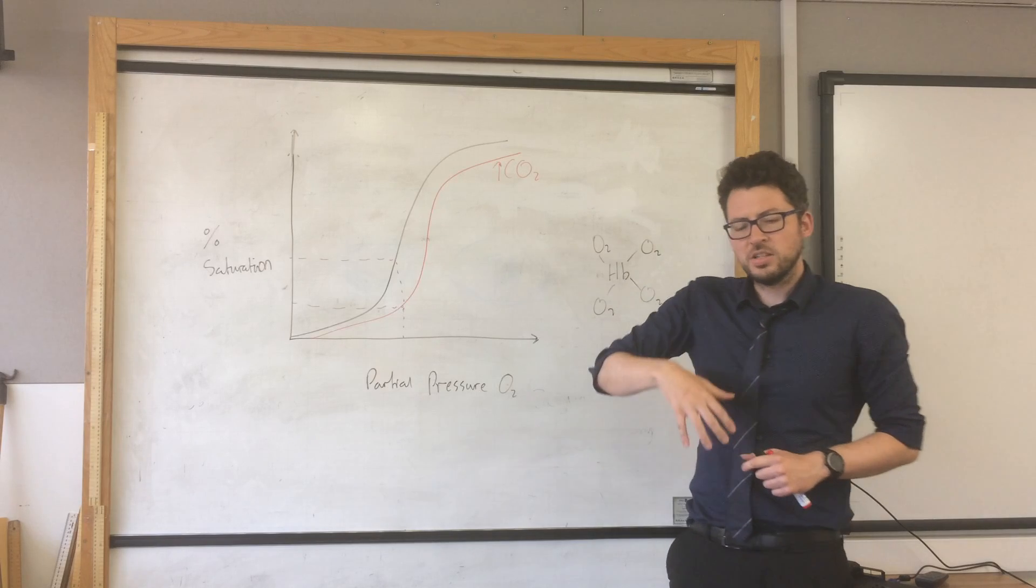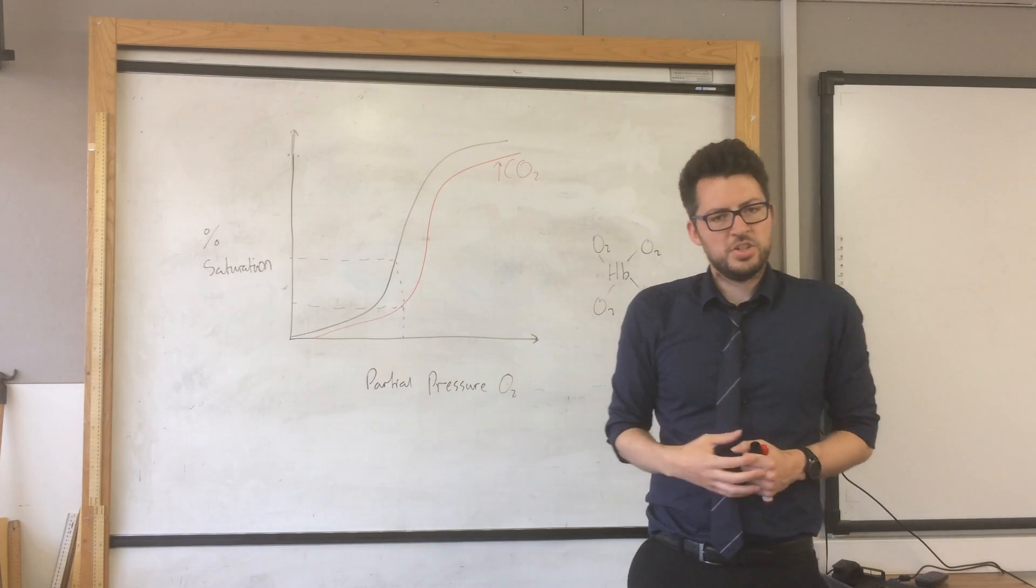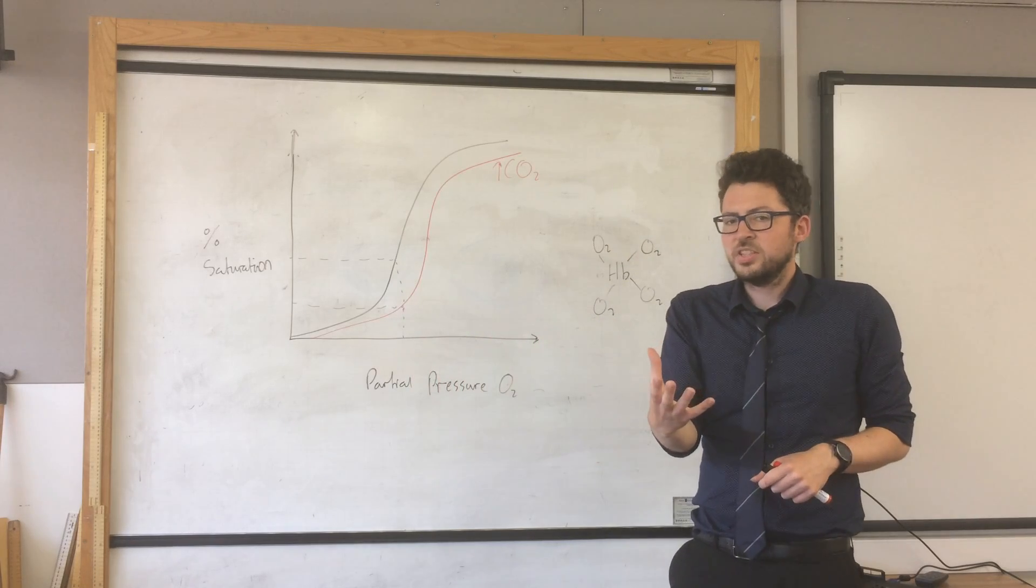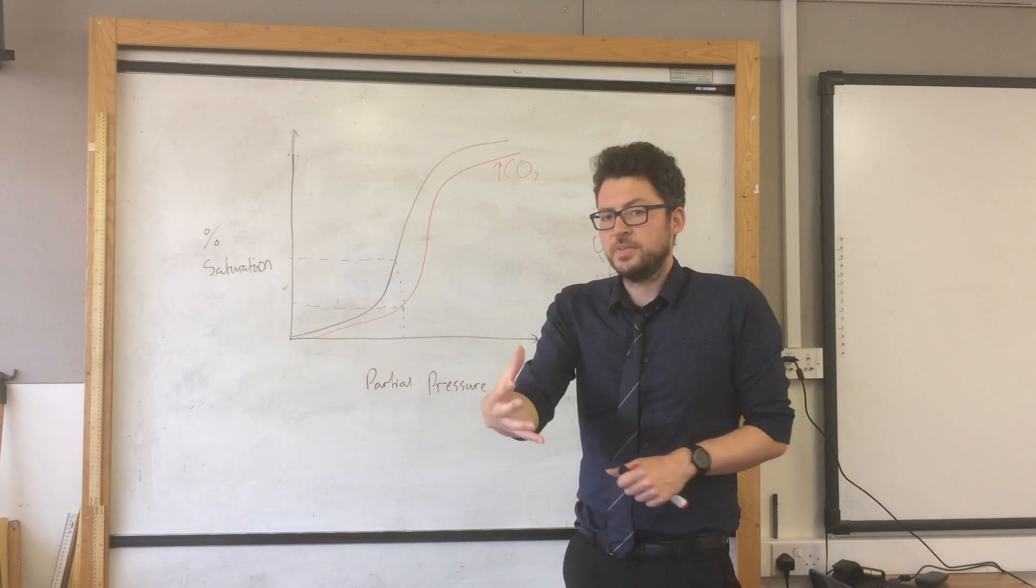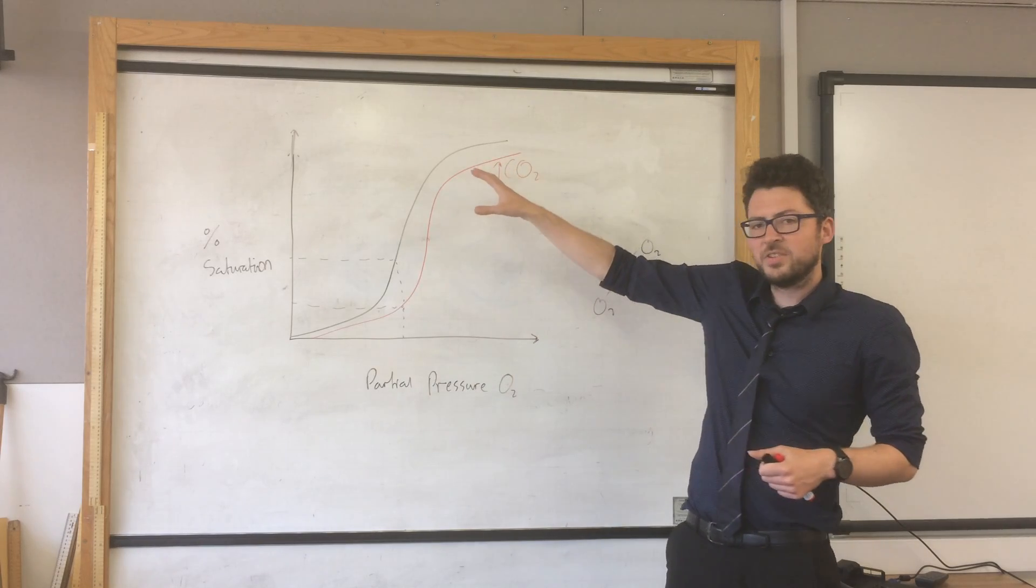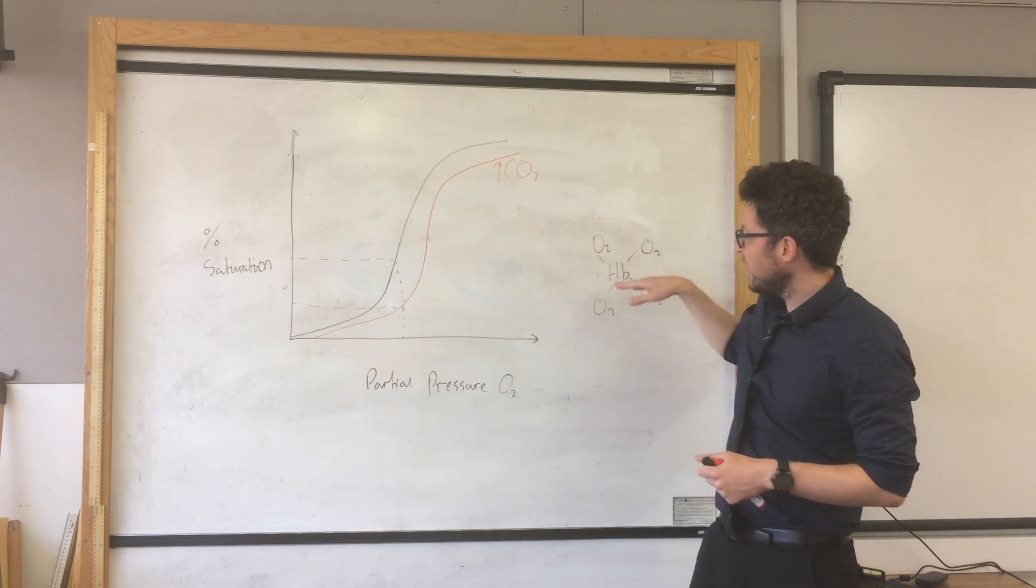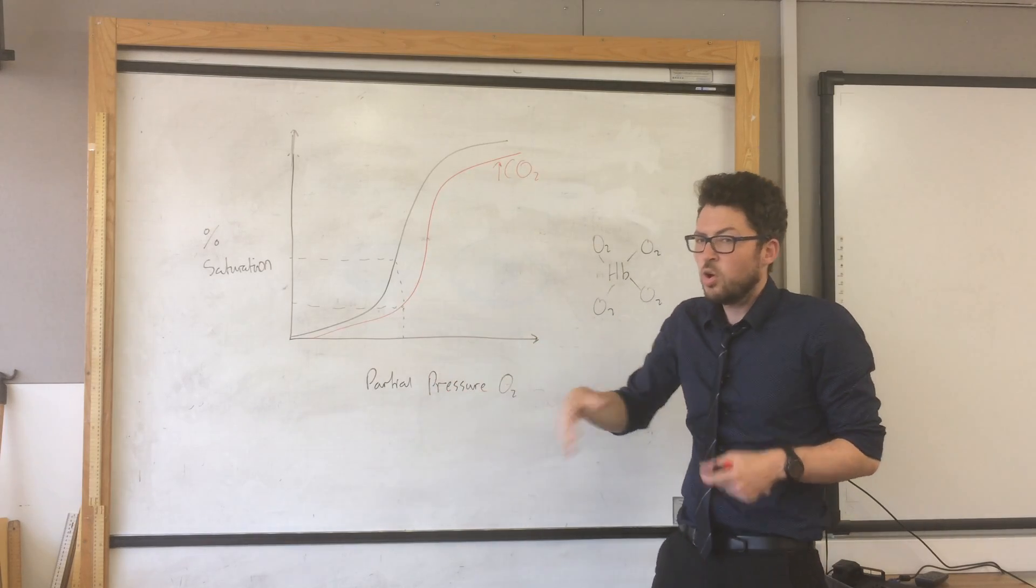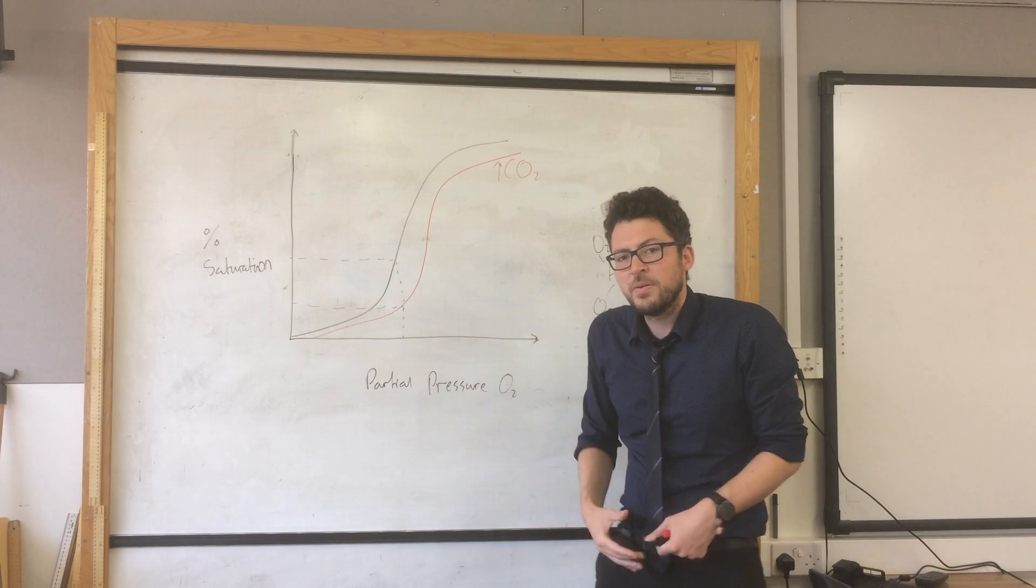The importance of this is because in respiring cells and tissues, they're going to be producing a lot of CO2. And those respiring cells and tissues will have a high demand for oxygen. So in places in the body where there's a high amount of carbon dioxide, the hemoglobin has a lower affinity for oxygen, or we could say it's going to give it up more easily.